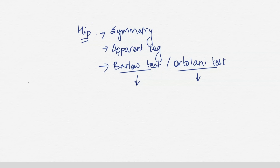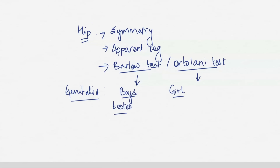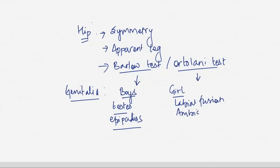Genitalia examination depends on the sex of the baby. If not specified, you can discuss what you do for both. For boys, check for undescended testes and for the position of the urethral meatus — epispadias or hypospadias. For girls, check for labial fusion, ambiguous genitalia (associated with congenital adrenal hyperplasia), and clitoromegaly.